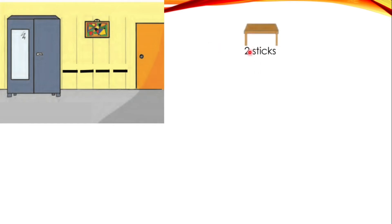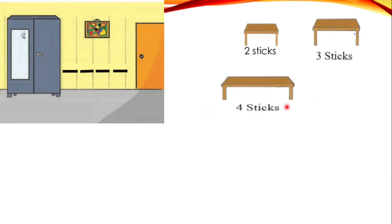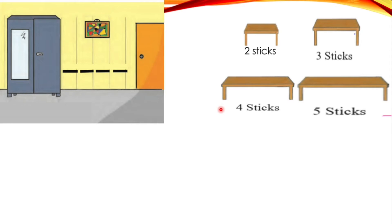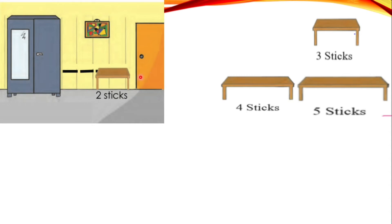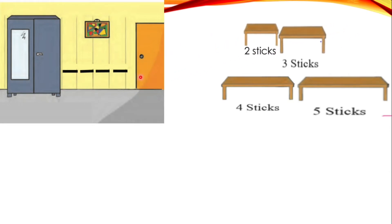He measured the space as: one stick, two, three, four — so he had four stick-lengths of space for the study table. He went to the shop and saw tables of two, three, four, and five stick-lengths. He first thought about the two-stick table, but it was too small for the space available.